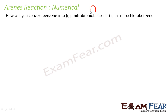Para-nitrobromobenzene has a nitro group at the para position and a bromine group. Now if I think about the two options — either first add bromine to benzene and then the nitro group, or first add the nitro group and then bromine — what if I first add the nitro group?